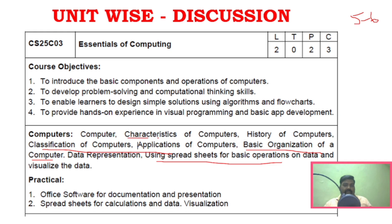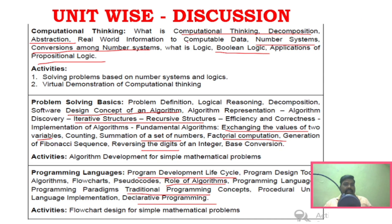For Part A two-mark questions, go through: characteristics of computers, history of computers, data representation, real-world information to computational data, and concepts from Unit 3 such as problem definition, logical reasoning, decomposition, algorithm representation, fundamental algorithms, and base conversions — all as 'what is what' short answer topics.